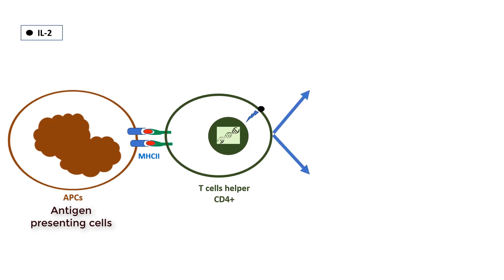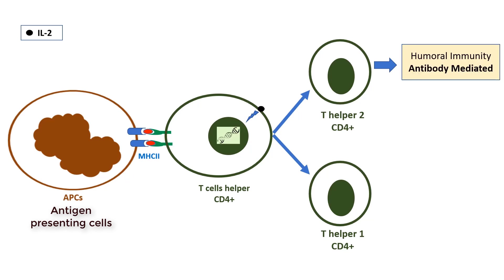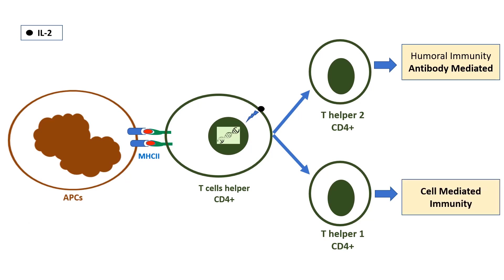This cascade ends with the replication of T-helper cells into two new T-cell lines: T-helper-2 CD4 cells and T-helper-1 CD4 cells. T-helper-2 cells are the main line for antibody immunity, known as humoral immunity, whereas T-helper-1 cells are actively involved in cell-mediated immunity.